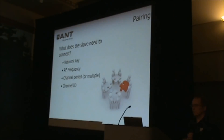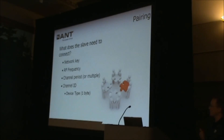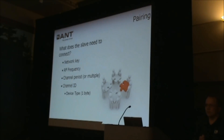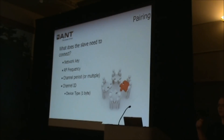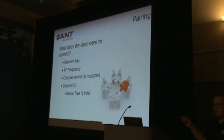Ideally, the slave also knows what the channel ID is. The channel ID is made up of three different parts. First, there is a device type — a single byte value that identifies what type of device you're talking to. This is another value defined by the AntPlus device profiles, telling you whether you're a heart rate monitor, a bike speed cadence sensor, or a blood pressure cuff. Your application can determine from that information whether this is a device you even want to talk to.